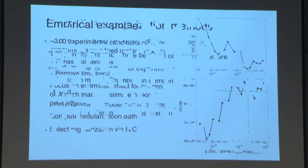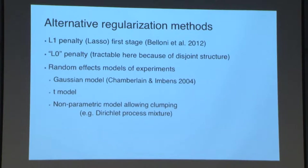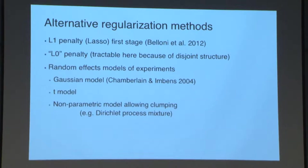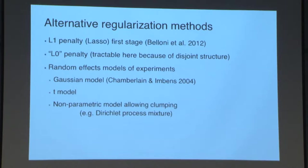Other regularization methods are possible here: L1 penalty, or explicitly modeling the distribution of experiments. The L0 is nice because it's tractable when it often isn't. The distribution of experiments has interesting features — clumpiness and really long fat tails — so one could use a random effects model with a Gaussian, t, or non-parametric model. That's something we're currently working on. Thanks for your time.